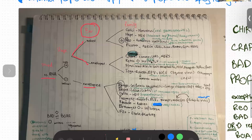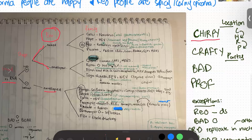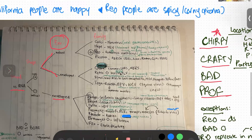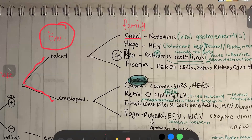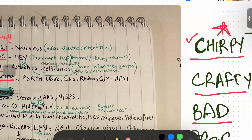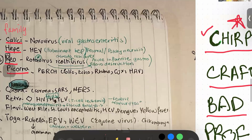The mnemonic here is chirpy, crafty, bad prof. Chirpy is location-based. The mnemonic for this one is 'California people are happy; the Rio people are spicy or corny.' So the family names are California (Calici), Happy (Hepe), and Rio people are corny — Picorna. So the first mnemonic — chirpy — covers Calici, Hepe, Rio, and Picorna.